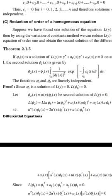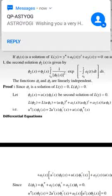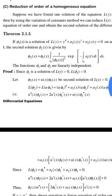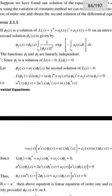The functions φ₁ and φ₂ are linearly independent. Since φ₁ is a solution of L(y) = 0, that is L(φ₁) = 0, let φ₂(x) = u(x)φ₁(x) be the second solution of L(y) = 0.